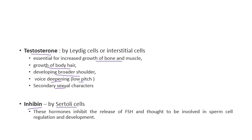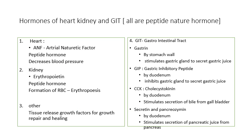The next hormone released is inhibin, secreted by the Sertoli cells. When the pituitary gland releases excess FSH (follicle stimulating hormone) — which is involved in sperm production — if there is excess FSH, it needs to be controlled. The hormone that stops excess FSH release is inhibin, released by the Sertoli cells.